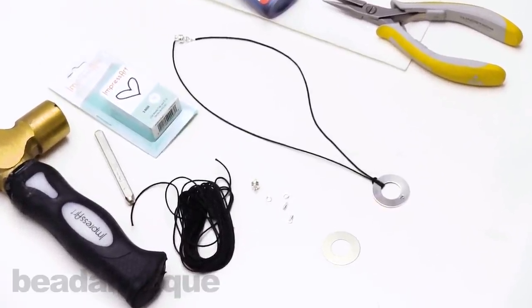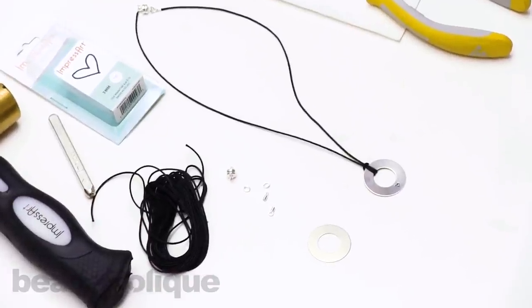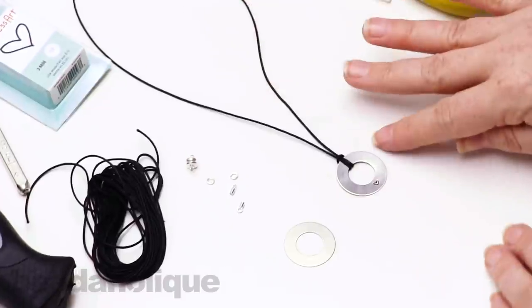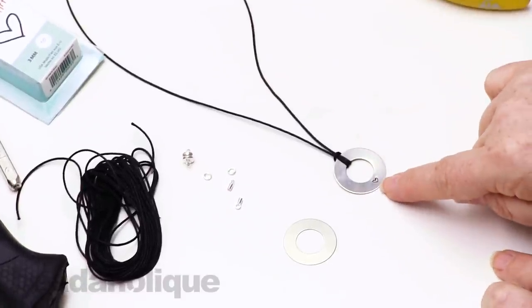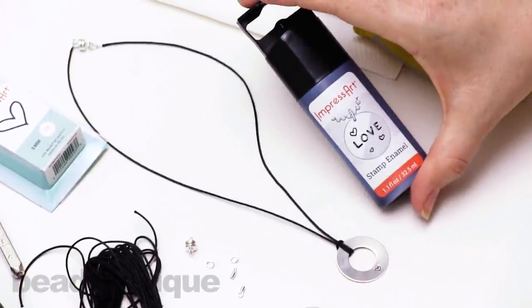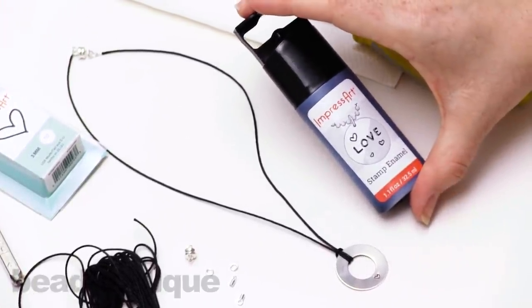Now this is a very simple project, and this is something that is really fun and easy to modify. So I have here on my table my example. I've done a little heart stamping, which is what we're going to do today, and I filled that in with the ImpressArt stamp enamel, so I'll show you how to do that step as well.